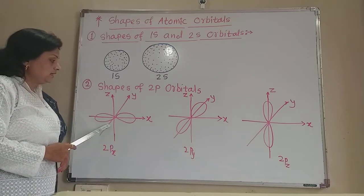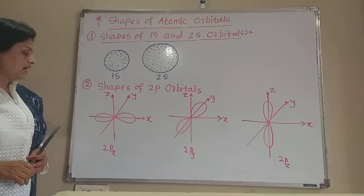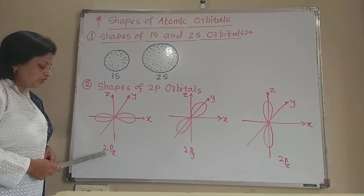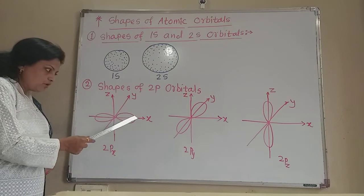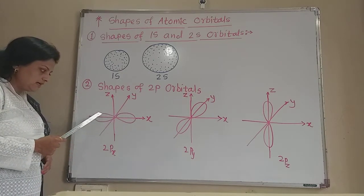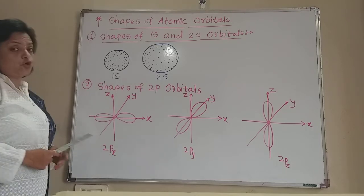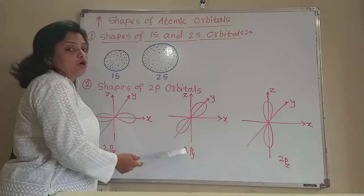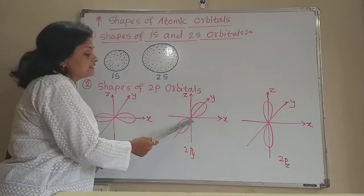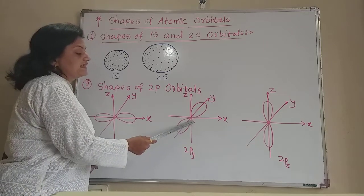These are x, y, and z axes. This is the 2px orbital because this dumbbell-shaped orbital is on the x-axis. This is the 2py orbital because this dumbbell-shaped orbital is on the y-axis.